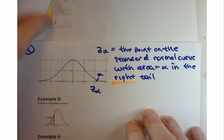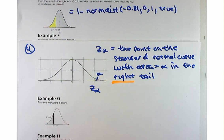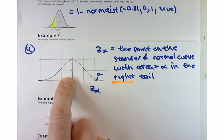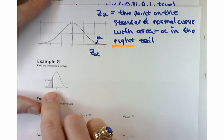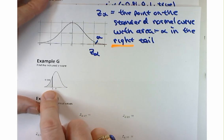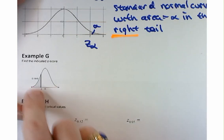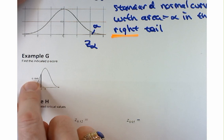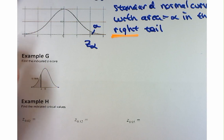This is going to necessitate sometimes that we use the normal curve in a backwards direction. Instead of starting out with a Z value and finding the area, we're going to find the Z value that corresponds to a given area. So we're going to start out with the area and then find the Z value.